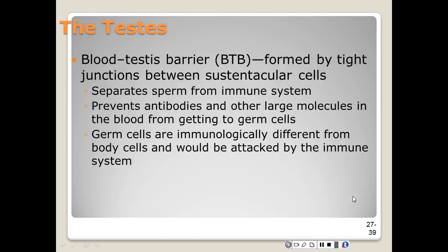The blood-testes barrier, or BTB, is formed by tight junctions between the Sertoli cells. They prevent antibodies, large molecules, and interstitial fluid from getting into the germ cells. This barrier is important because the germ cells are genetically different from other cells. In some cases of sterility, it occurs when the BTB fails to form adequately in adolescence.